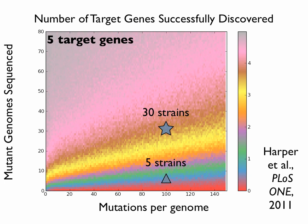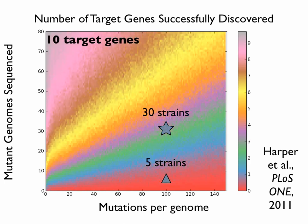As you increase the number of target genes, you're splitting the signal over a larger number of targets, making the signal in any individual target weaker and harder to detect. The slope of the iso-discovery lines steepens a bit, but even with 30 strains you're at a level where you're definitely going to detect, say, three or four target genes out of the 10 included in this analysis.